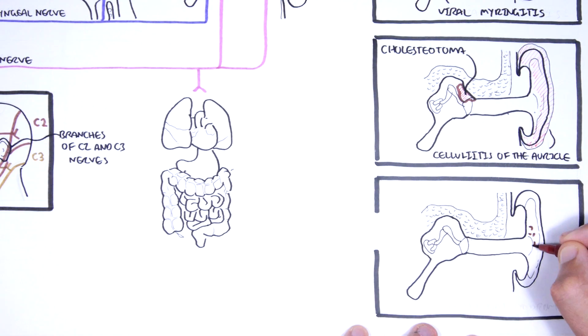Herpes zoster infection, which is shingles, is essentially reactivation of the chicken pox virus, and this can manifest in the outer ear.